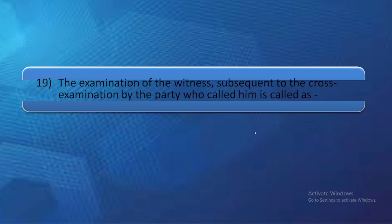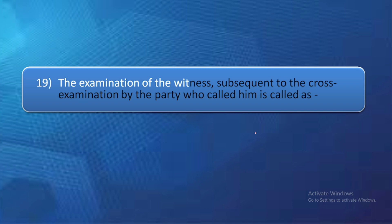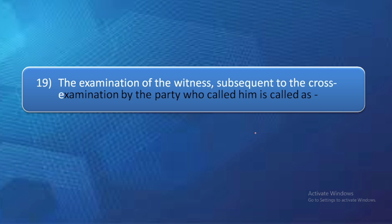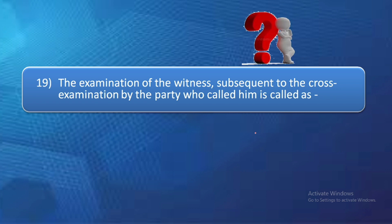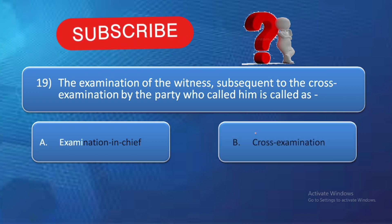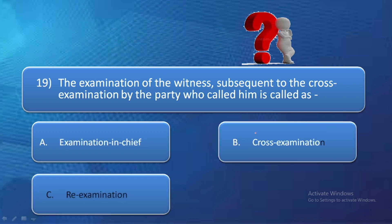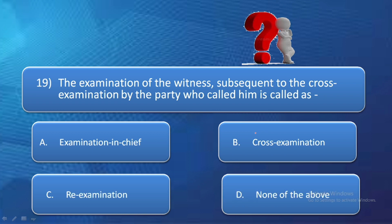Next question: The examination of the witness subsequent to the cross examination by the party who called him is called as — option A: examination in chief, option B: cross examination, option C: re-examination, option D: none of the above. If a witness's examination is done by the party calling him it is examination in chief; if by the adverse party it is cross examination; but if by the calling party after cross examination, we call it re-examination. So the right answer is option C — re-examination.